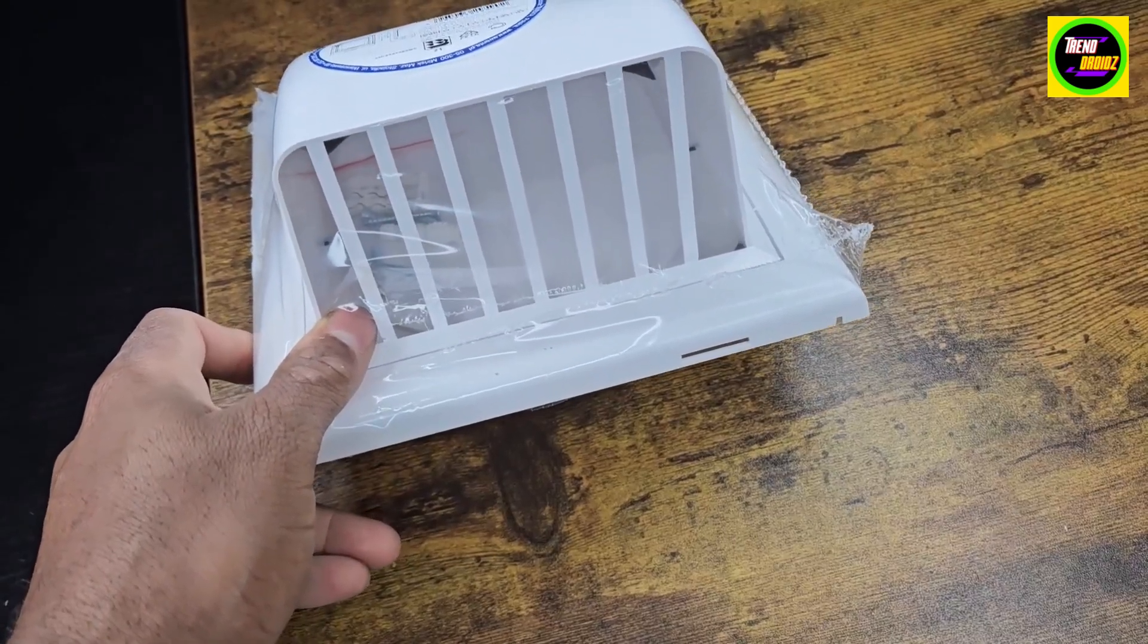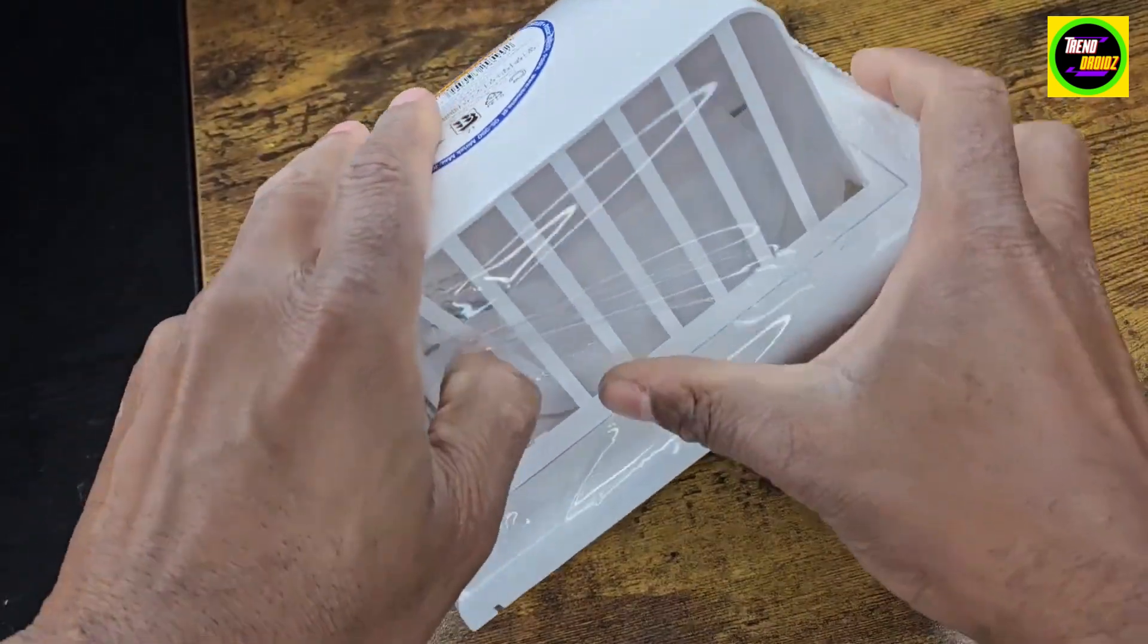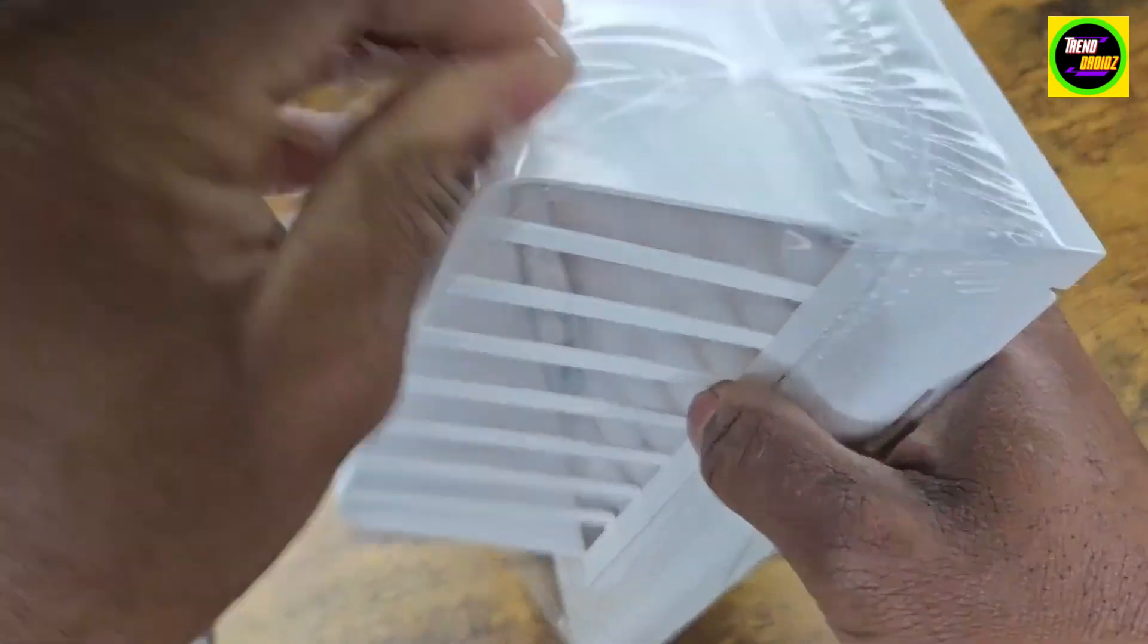This is the 4-inch exhaust hood rain cover. It's 7 1⁄2 by 7 1⁄2. I'm going to open it up real fast so you guys can see how it looks.